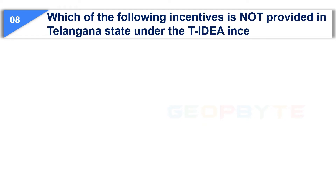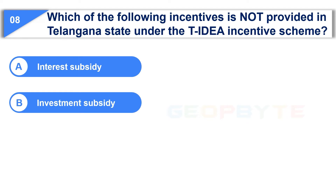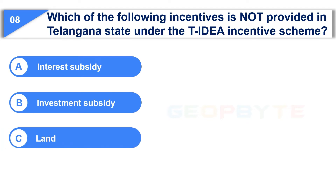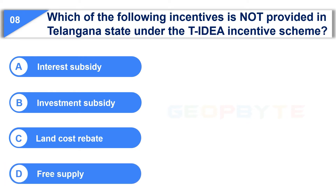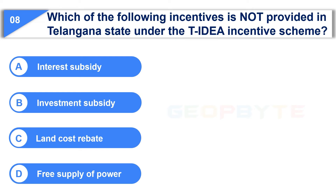The eighth question is: In Telangana State under the T-IDEA Incentive Scheme — Option A: Interest Subsidy. Option B: Investment Subsidy. Option C: Land Cost Rebate. Option D: Free Supply of Power. And the correct answer is Option D: Free Supply of Power.